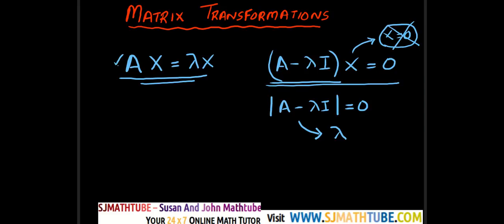And if you have a 2 by 2 matrix, this will be a quadratic equation. If you have a 3 by 3 matrix, then we will get a cubic equation and so on. And this equation is called the characteristic equation of A.